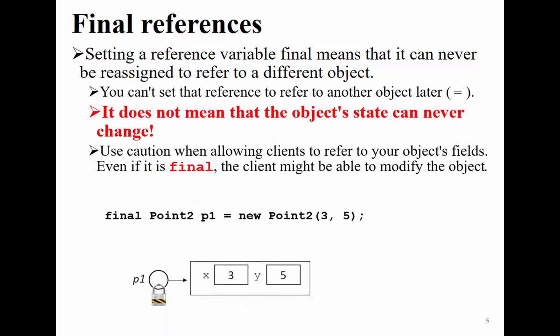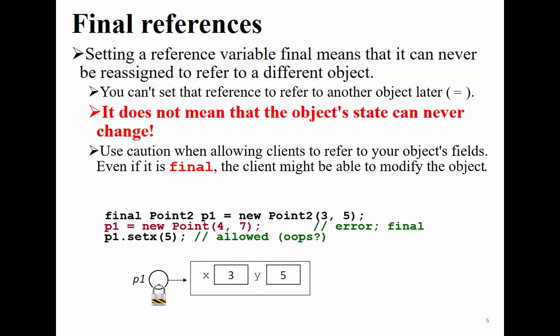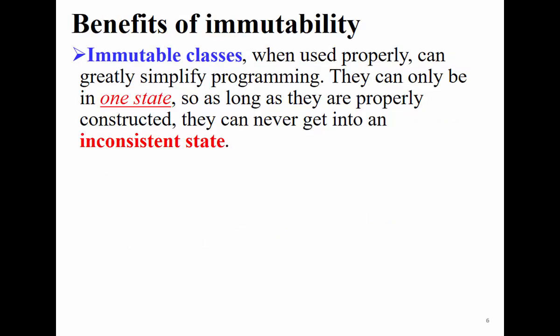Going back to the slide: whenever we use final with a reference, the reference is fixed but the state of the object is not. We can still change it. Now, there is a benefit to using immutable objects. Immutable objects always have one state, and once we create an immutable object, we cannot change the state of that object. You design your program to create the object in the appropriate state, so it's never in an inconsistent state.